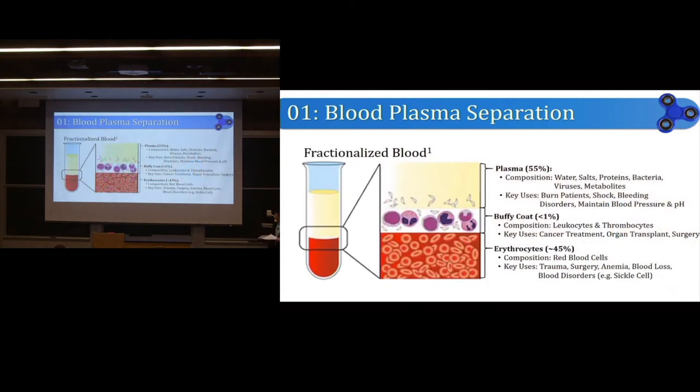So our solution for that is let's fractionalize it. Let's separate into its components: the plasma, the buffy coat, and the erythrocytes or red blood cells. You can see from my diagram on the left here, surprise, blood is not all red. We can also see that the nasty stuff like proteins and bacteria and viruses have been successfully separated out from the cells, which means that it can now be used for other research contexts. And I do say nasty stuff, but really, we can use a lot of these proteins in other treatments or different research studies as well.